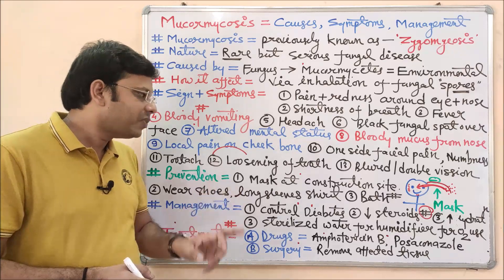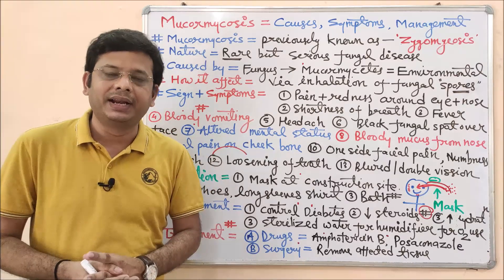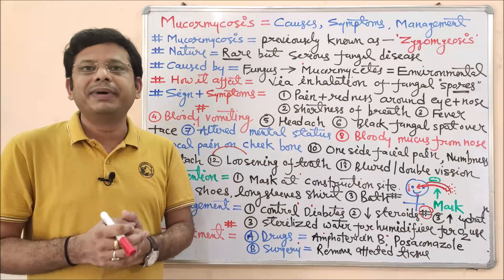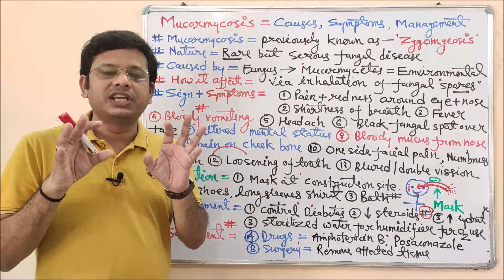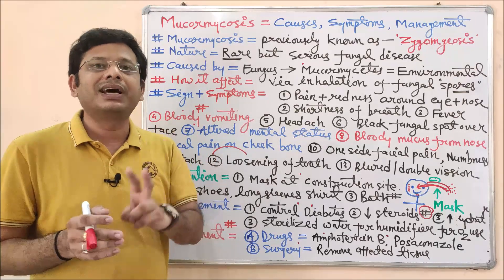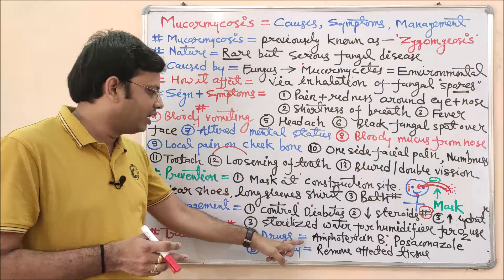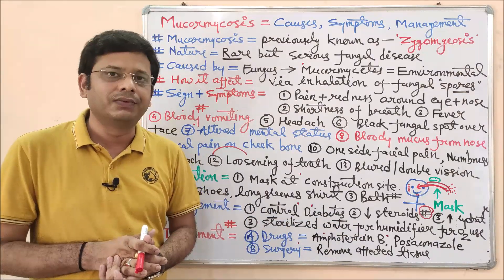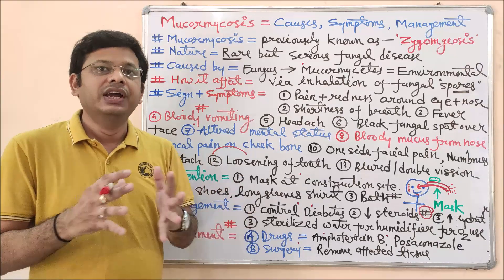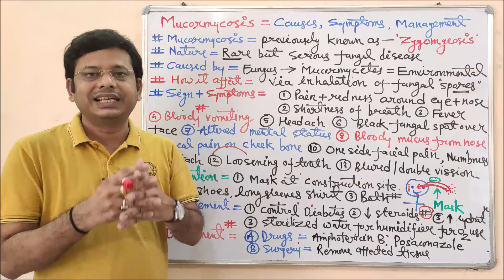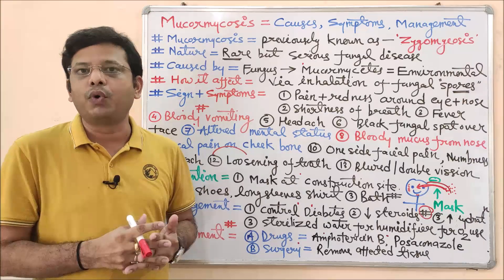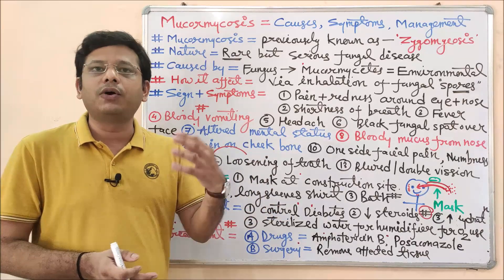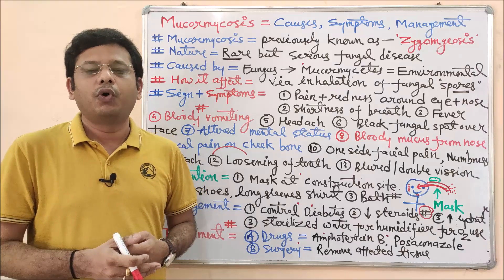For treatment, there are two methods. The first is medicament-based: as per the literature, two medicines are indicated — Amphotericin B and Posaconazole, which is an azole derivative under the class of antifungal drugs. The second option is surgery, where the affected area showing black spots of mold on the face must be surgically removed to stop the spread of the fungal disease to other parts of the body.